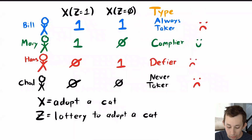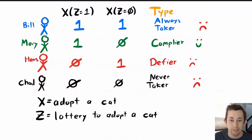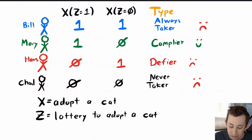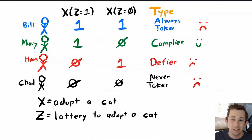In the instrumental variables video, we had a setup where the instrument Z was getting your name picked out of a hat in a lottery to adopt a cat. The treatment X was whether or not you adopted a cat, and the outcome Y was your stress level on a score of 0 to 10. We had four people: Bill, Mary, Hans, and Chad.